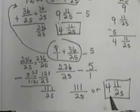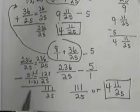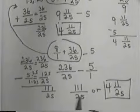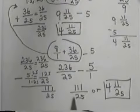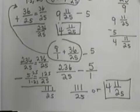And again, get common denominators to add them. Or in this case, to subtract them. And then get your improper fraction here and that could be left that way or you could make it the 4 and 11/25.